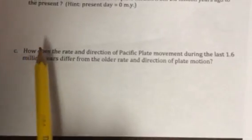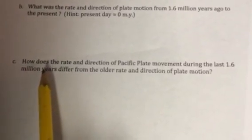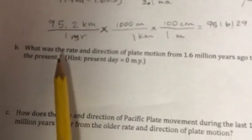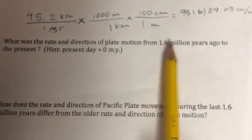Now, to do the next calculation down here, we want to see how does the rate... Oh, okay. We want to figure out the rate and direction of plate motion from 1.6 million years to the present. So you're just going to be calculating the rate between Kilauea and Molokai. So, again, you're going to calculate the distance, run that same calculation, and then draw your arrow. And you'll see that the arrow's direction has changed a little bit, and that's how you'll answer Part C as well. If you have any questions, let me know.